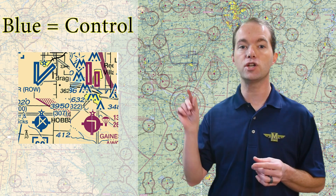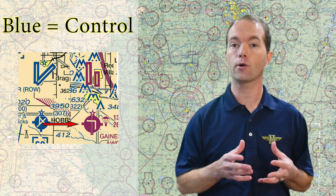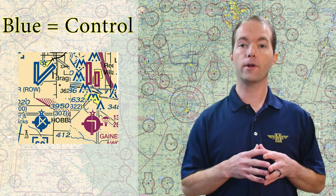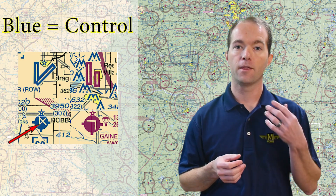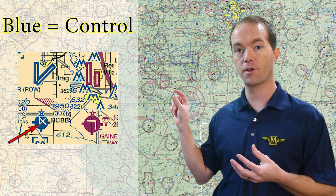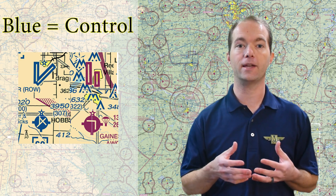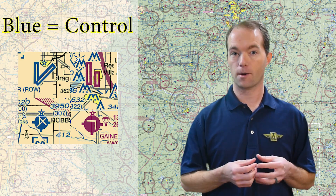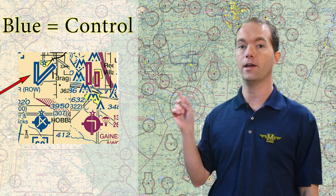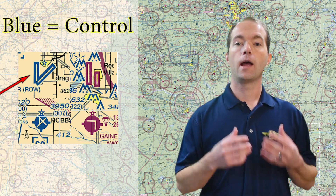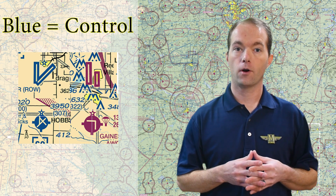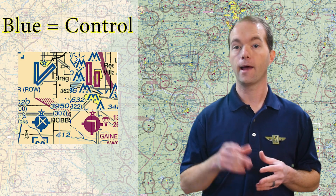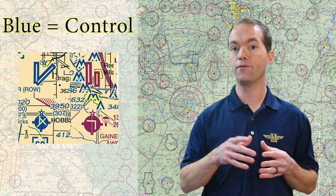Blue airports are controlled and magenta ones aren't. Most airports are little magenta circles with a line or two inside depicting the runway direction and length. Controlled airports with shorter runways are depicted in blue. A filled circle means the runway is paved and indicates the longest runway is less than 8,070 feet. The biggest airports are depicted without circles — just the runway layouts — and are also typically blue. Busier airports, bigger planes, so they need controlling. There are a few long magenta ones out there though, so see if you can find them.